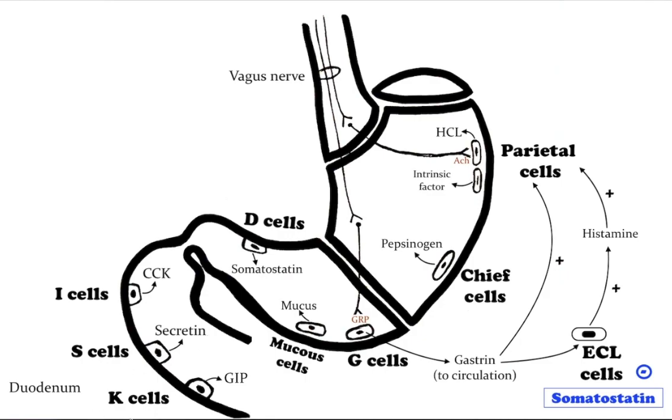K cells secrete gastric inhibitory peptide, an inhibiting hormone of the secretin family of hormones. While it's a weak inhibitor of gastric acid secretion, its main role is to stimulate insulin secretion.